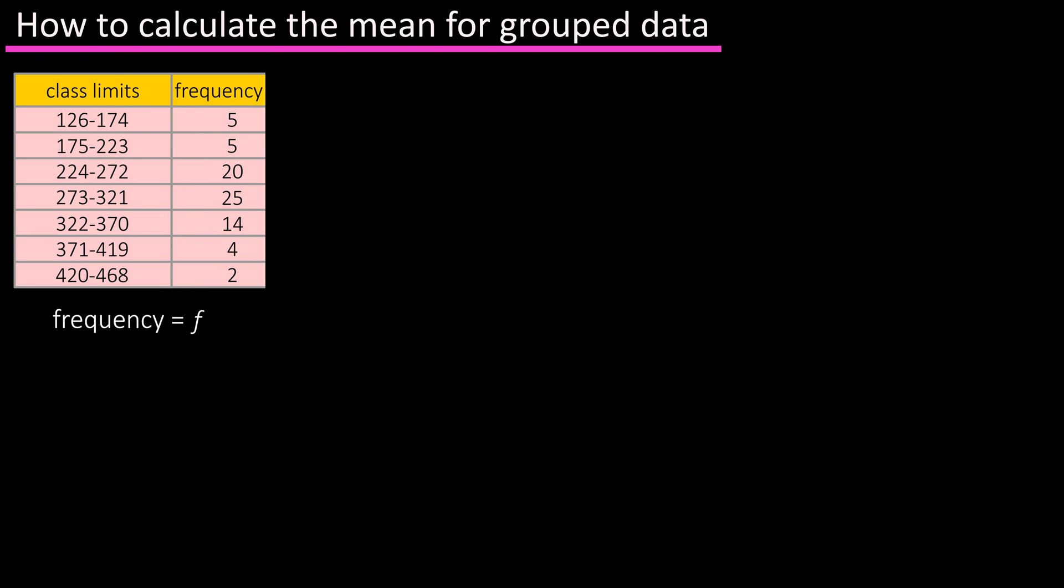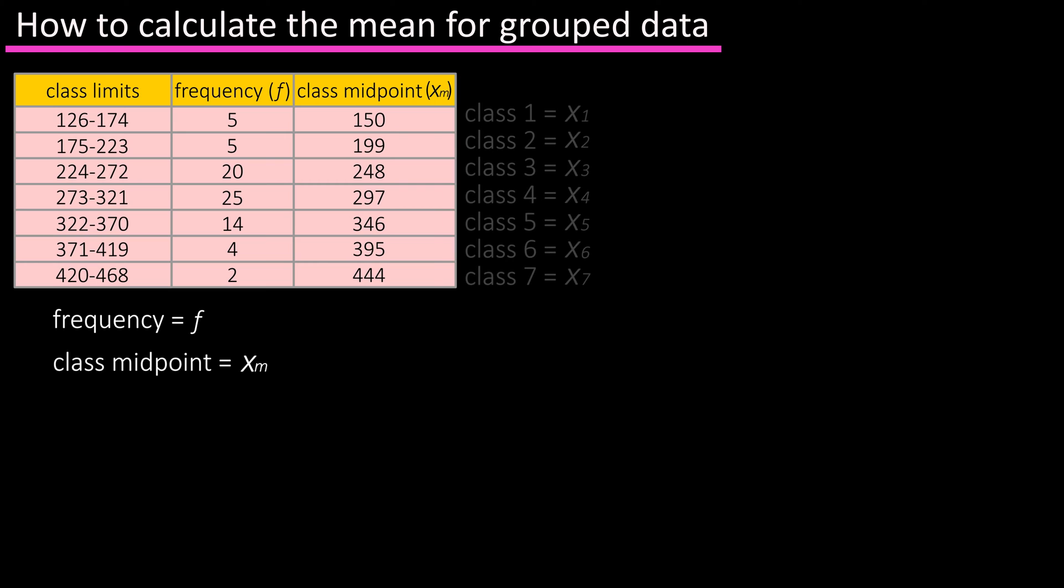To make things clear, we're going to label frequency as f, and class midpoint as xm, where m can be one to seven, the number of classes we have.